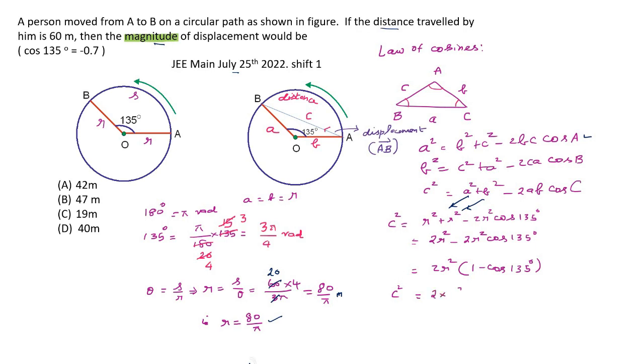R squared is 80 by pi, the whole squared. 80 squared by pi squared into 1 minus cos 35. Sorry, 1 plus 0.7 because cos 135 is given as minus 0.7. So, 1 minus of minus 0.7 is 1 plus 0.7. But, we want c. So, taking square root, 80 squared by pi squared, take square root means 80 by pi. 1 plus 0.7 is 1.7 multiplied by 2, 3.4, take square root because on the left, we have c. So, you evaluate this.